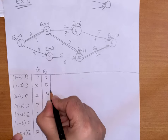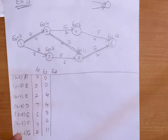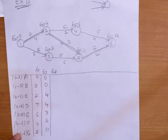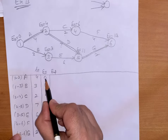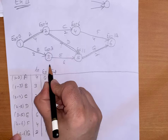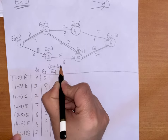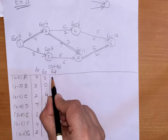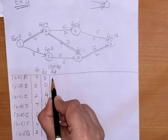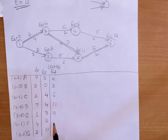Now we are to find out earliest finish time in the table. The formula is: earliest finish time equals earliest start time plus expected time. So the values are: 4, 3, 6, 11, 9, 10, 13.